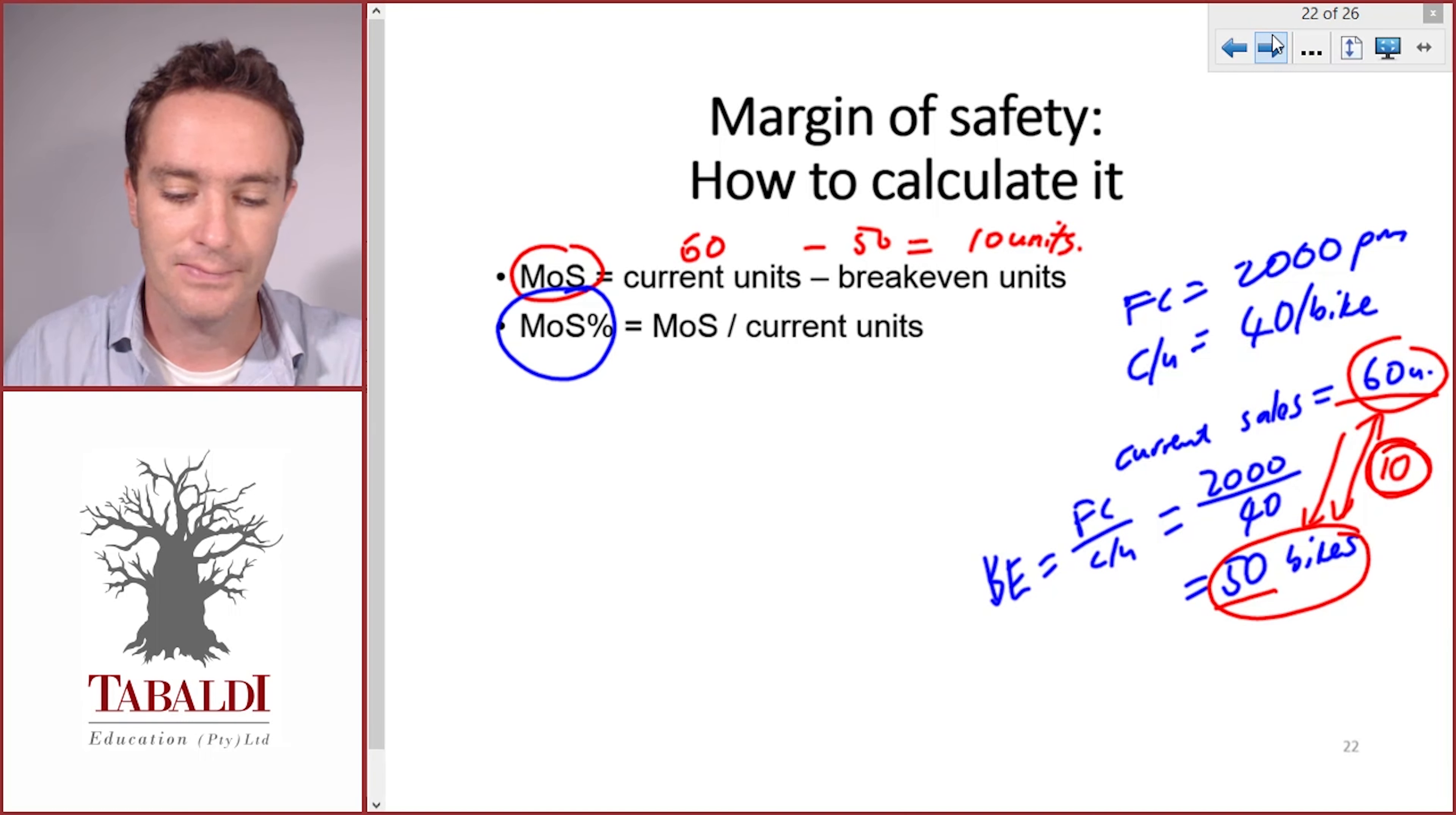If it's big numbers, it's sometimes more meaningful to give it in percentages. The margin of safety percentage is the margin of safety in units, the 10 from the first calculation, divided by our current sales level of 60 units. This will give us an answer of 16.67 percent.